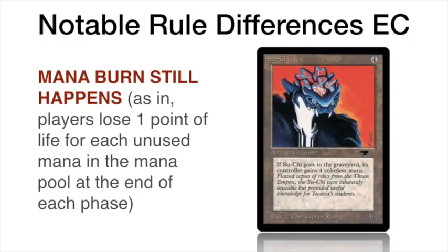That balance exists in Eternal Central but not in Swedish rules, which is why Su-Chi is considered stronger in Swedish. My personal favorite way to use that four mana is on the Tome — tap and draw a card — or drain into a Mishra's Factory. But there are other options. I think it's still very playable in Eternal Central despite mana burn; it actually makes the card more balanced. Trust me, a 4/4 for four mana is just very powerful in old school.